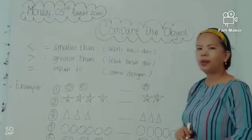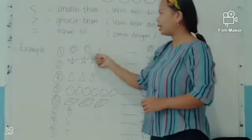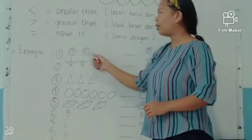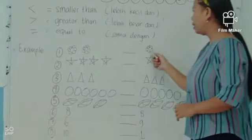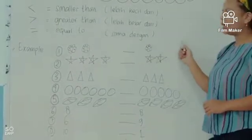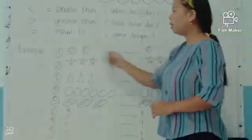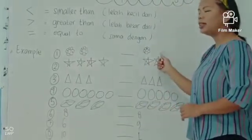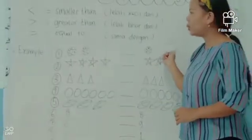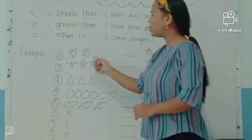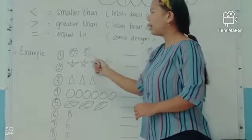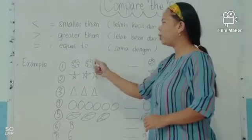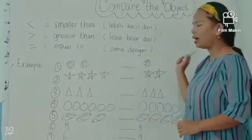For example, number one — we can see the object. Number one is the flower. There are two flowers in the left side and one flower in the right side. We want to compare the flower in the left side and the flower in the right side. We must see if the flowers in the left side are smaller than, or greater than, or equal to the right side.